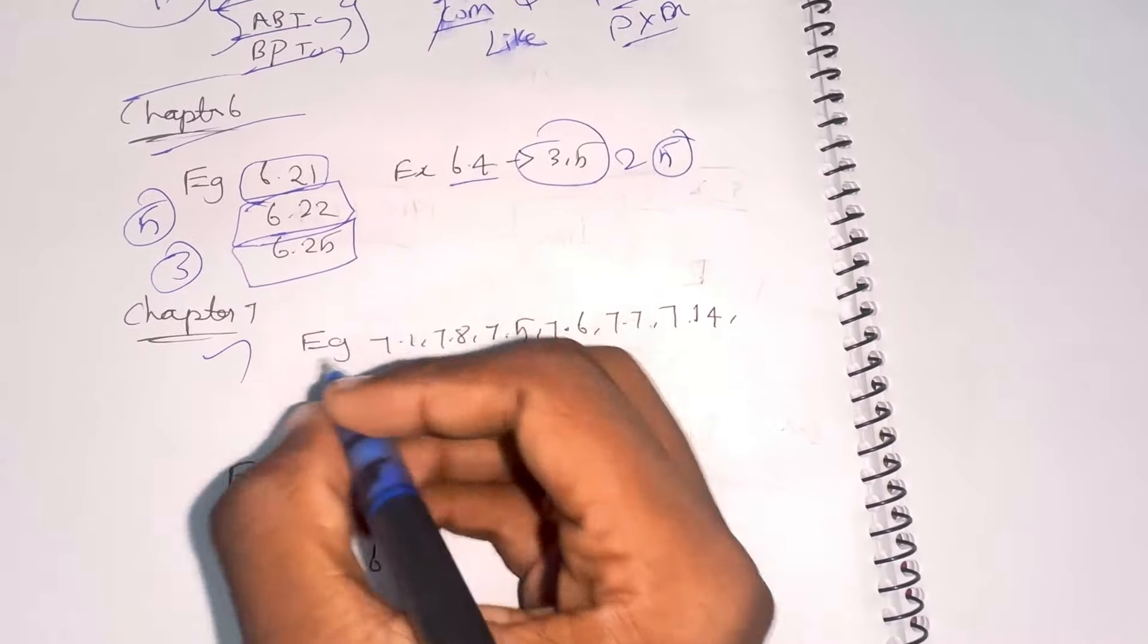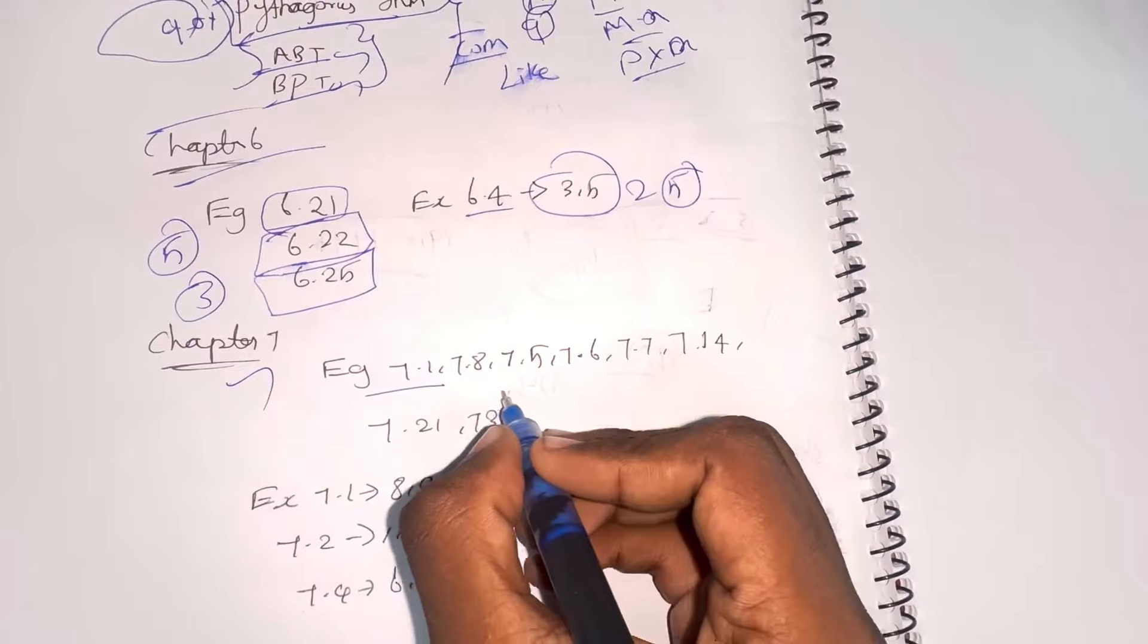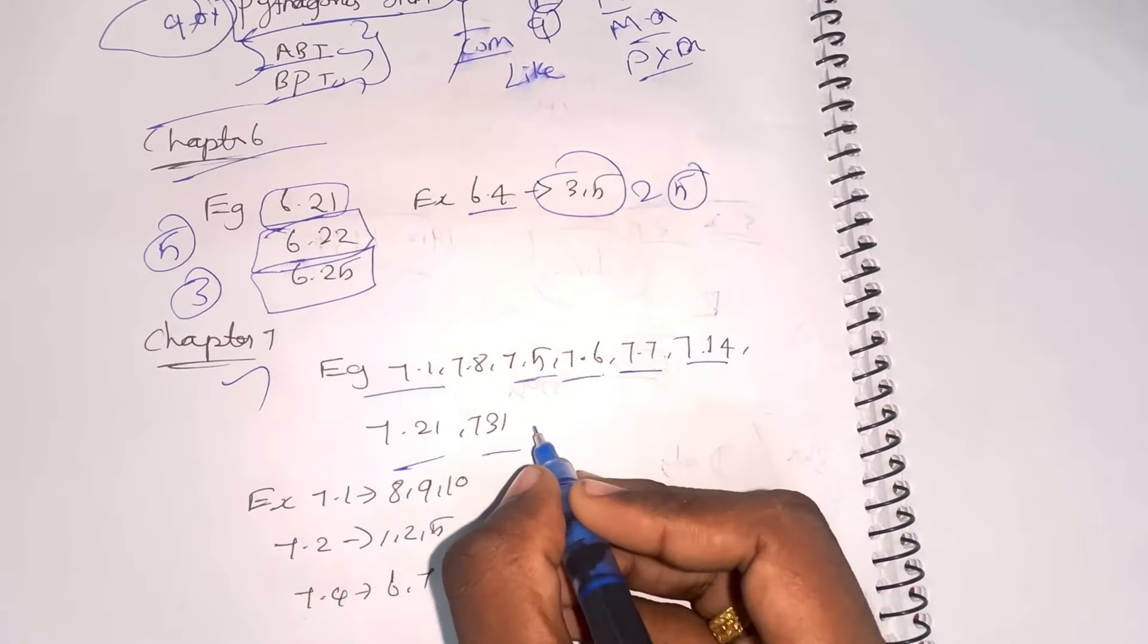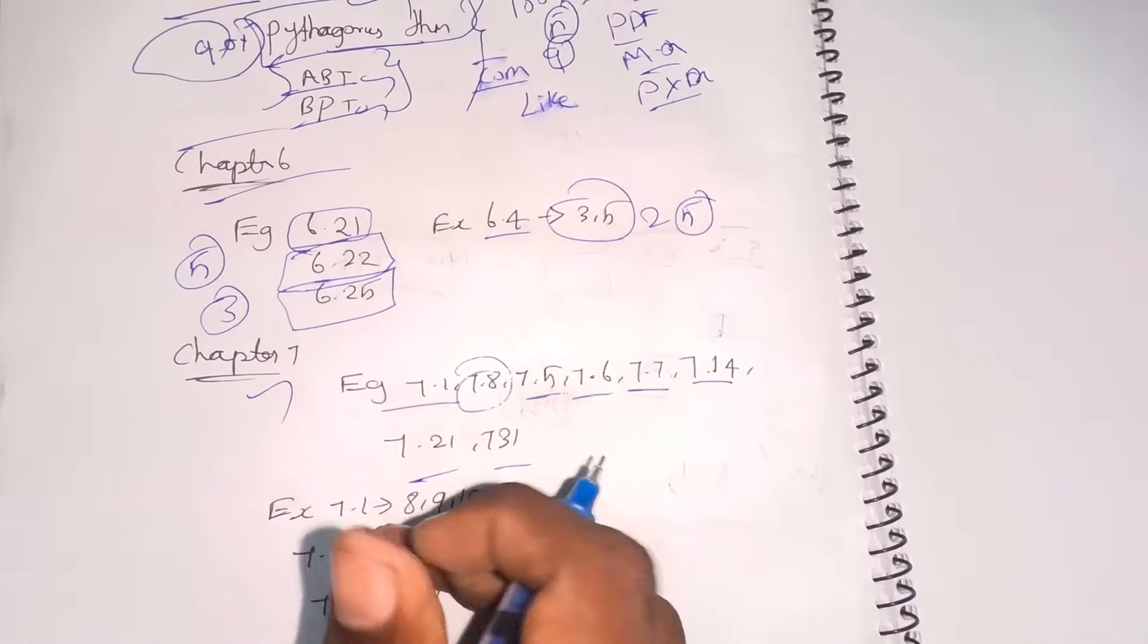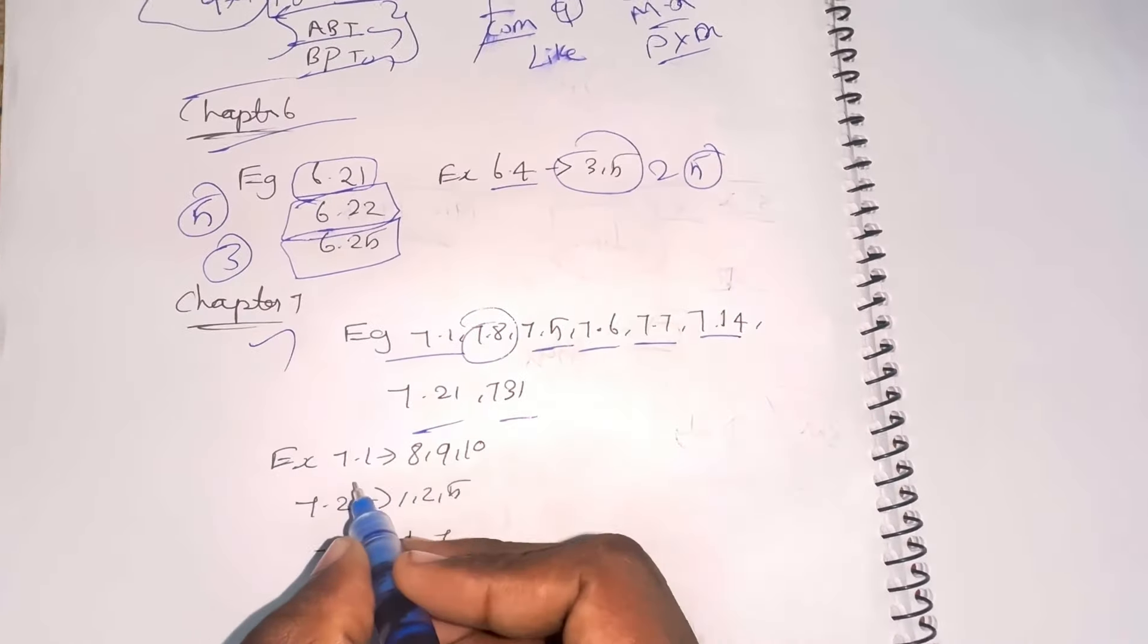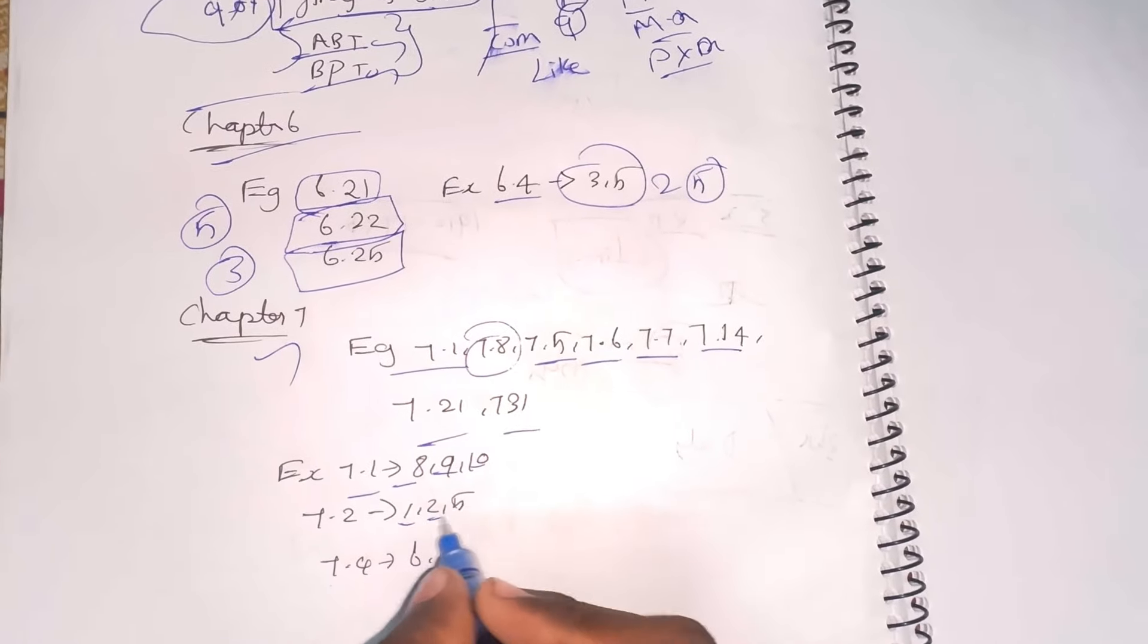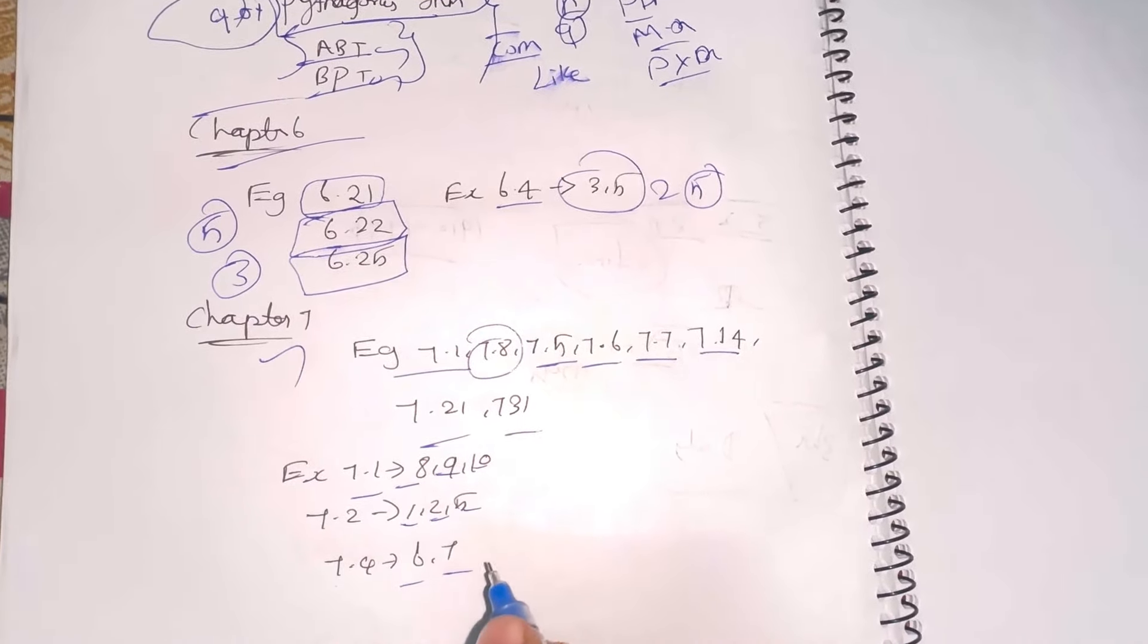Now we have chapter 7, mensuration. Examples 7.1, 7.5, 7.6, 7.7, 7.14, 7.21, 7.31, and 7.8 are very important questions. Exercise 7.1 questions 8, 9, 10; 7.1 questions 1, 2, 5; and 7.4 questions 6, 7.